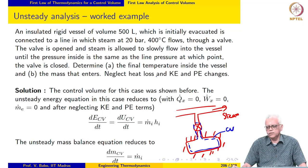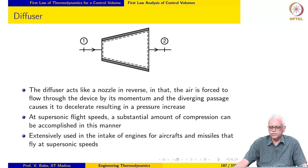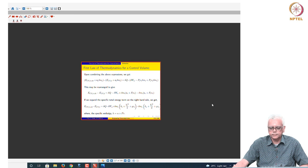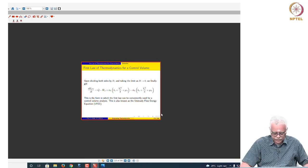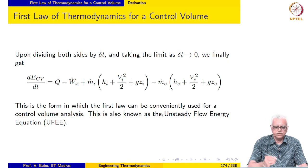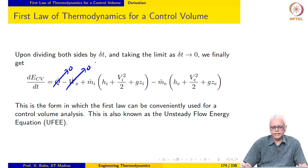Recalling the unsteady flow energy equation in its full form, for the problem under consideration, it is given that there is no heat loss, so Q_dot may be taken as 0. There is no external work, so W_x_dot may also be taken to be 0.